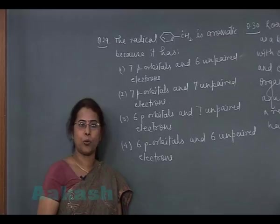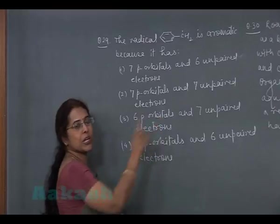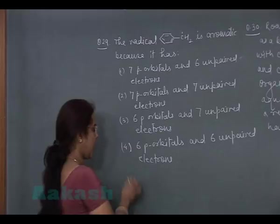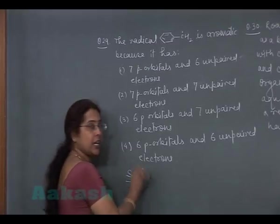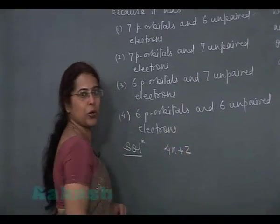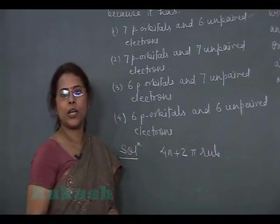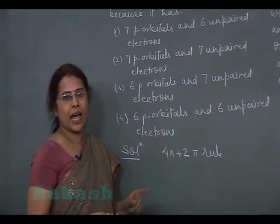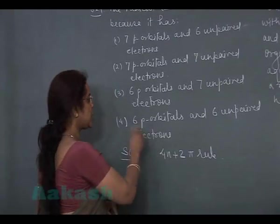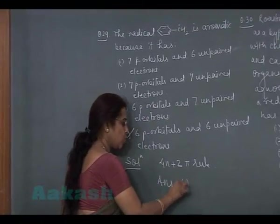Any of the compounds or any of the radical can be considered aromatic if it obeys Huckel's rule. And according to Huckel's rule, any of the aromatic system must obey 4n plus 2 pi rule. It means there should be 6p orbital and 6 pi electron which are completely delocalized. So answer will be 4th answer. And correct option is 4th option.